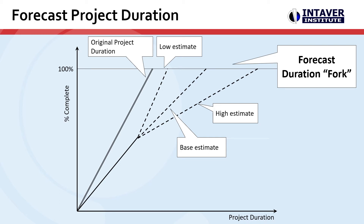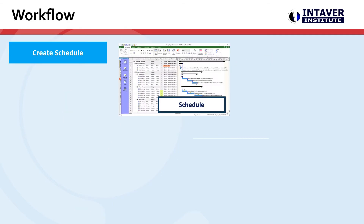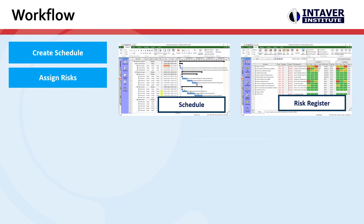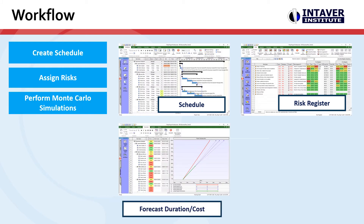Let's quickly look at the workflow. We're going to create a schedule, assign risks to the project schedule and costs, and perform Monte Carlo simulations. In the tracking view, we can see the original baseline and then the cone of uncertainty that shows us the low, base, and high estimates for the estimates at completion.